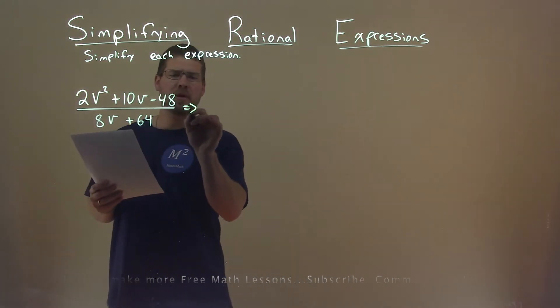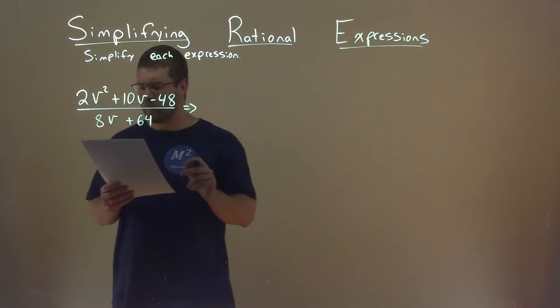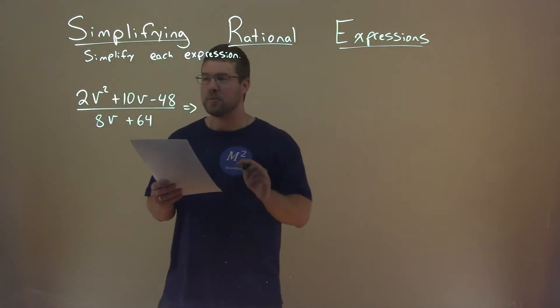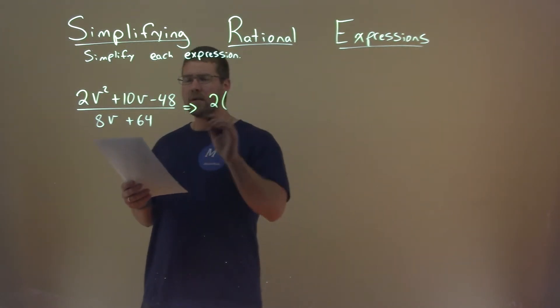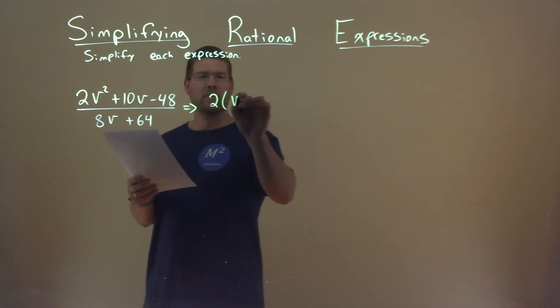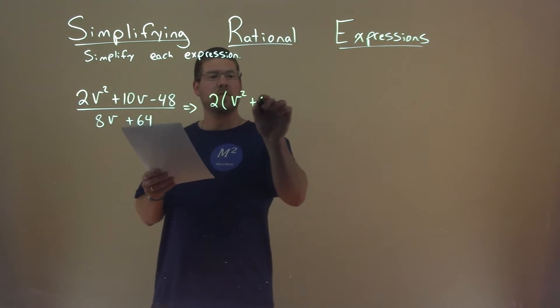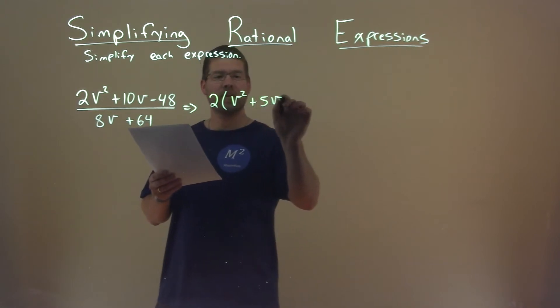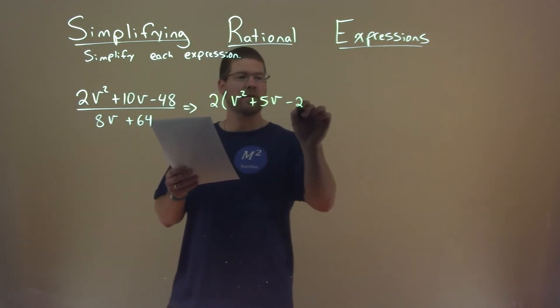The first thing I want to do here is I can see the numerator — I can pull out a 2. So if I pull out a 2, I'm left with v squared plus 5v minus 24.